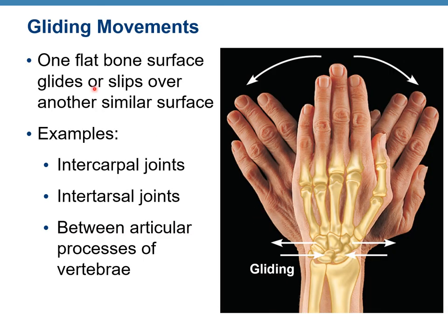Gliding movements occur when one flat bone surface glides or slips over another similar surface. Examples include intercarpal joints, intertarsal joints, and between articular processes of vertebrae.